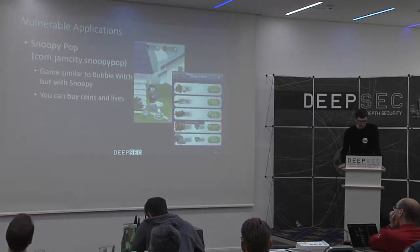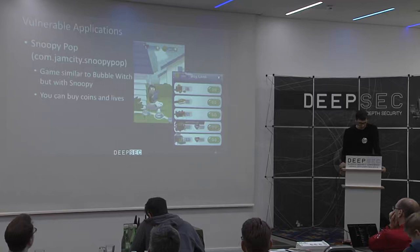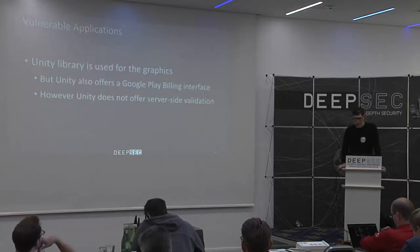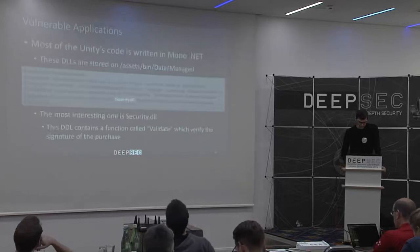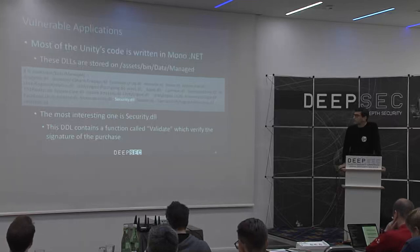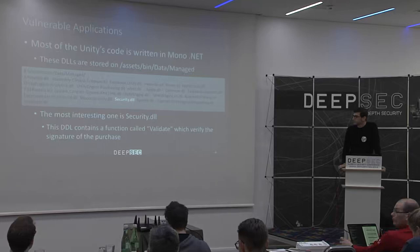The next application is Snoopy Pop. If you know Bubble Witch, it's basically the same game but with Snoopy. You can buy coins or leaves. In this case, a Unity library is used — they use the Unity IAP plugin to perform payment processing. What's interesting with this version is that most Unity code is written in Mono/.NET. When you decompile the application, you find DLLs stored under Assets/Bin/Data/Managed, and there's one DLL called Security which performs the purchase validation.